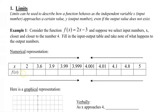Starting from the left, if I start at 2, I put 2 in for x: 2 times 2 is 4, minus 3 is 1. Next I go to 3.6: 2 times 3.6 minus 3 gives 4.2. Continuing with 3.9, I get an output of 4.8. For 3.99, I get an output of 4.98. And for 3.999, I get an output of 4.998.